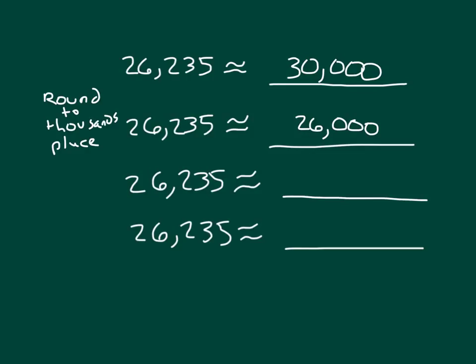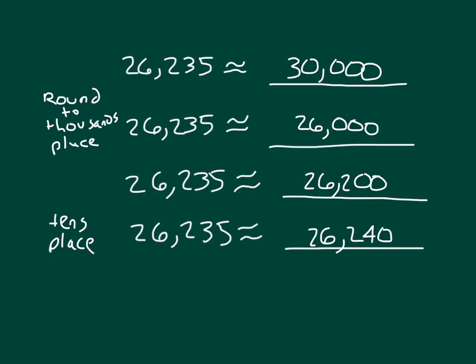When we round to the hundreds place, we would get 26,200. Notice that we had 30,000, or 26,000, which gets even closer to this number, or even 26,200. For the last one, if we round to the tens place, let's see what happens. In this case, 235 happens to be the midpoint, and remember, in that case we round up — so the answer is 26,240. Our understanding of place value helps us round numbers.